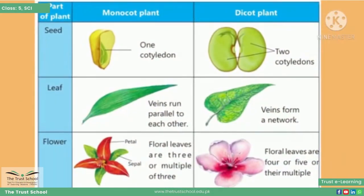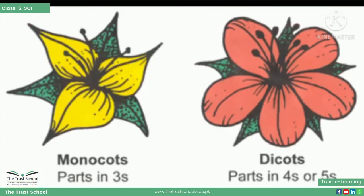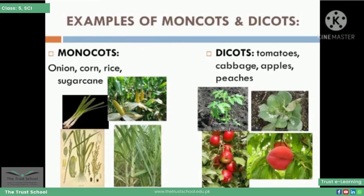If we talk about seeds, a monocot plant has only one cotyledon and a dicot plant has two cotyledons. If we talk about leaves, a monocot plant has veins arranged in a parallel sequence, while a dicot plant has veins randomly arranged forming a network. Another difference is monocot plants have three petals and dicot plants have four or five petals. Examples of monocots are onion, corn, rice, and sugarcane. Examples of dicots are tomatoes, cabbages, apples, and peaches.